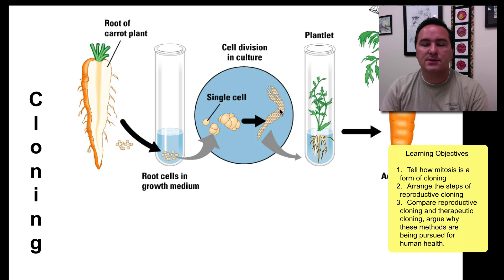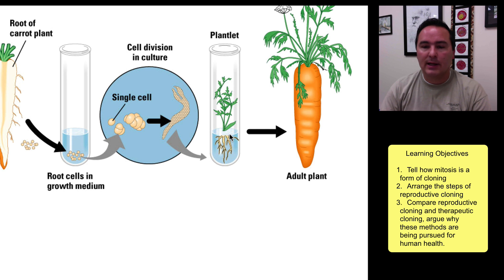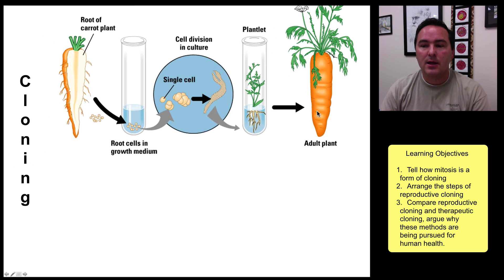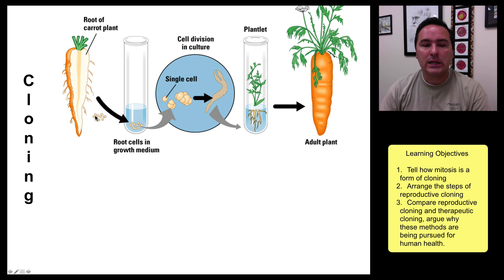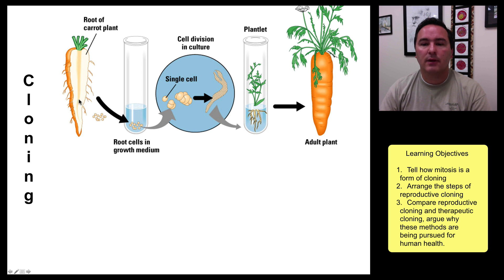As it starts to grow, the cells start to look at each other and say, I'll become the leaves and you become the root part. And eventually you can allow that to grow and it becomes the adult plant, the adult carrot. Now this adult carrot is a clone of the original adult carrot, because it is genetically identical and the genotype — the genes — all came from a genome that came from one of the cells of the adult carrot. And so that is essentially a clone.